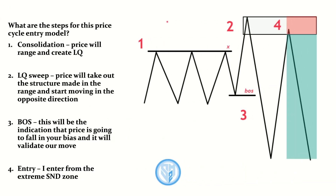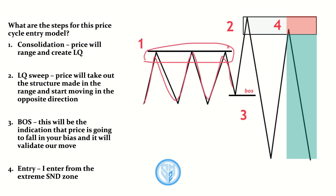Without further ado, let's get right into the entry model and how it ties into the price cycle. I'm going to break it down in four steps. Step one is consolidation — I'm looking for price to range and create liquidity, because price will eventually come out and take it out.